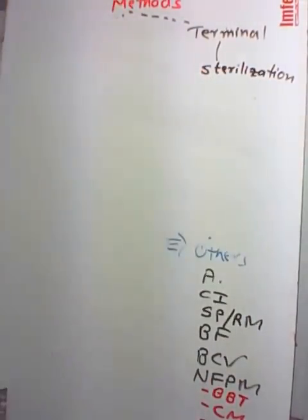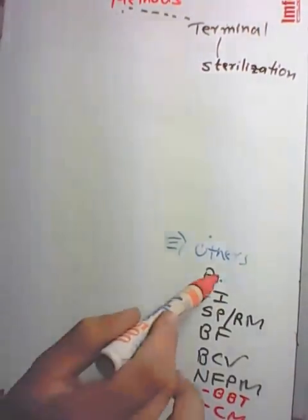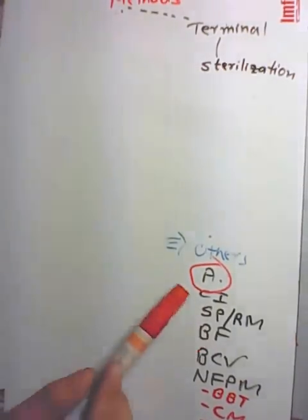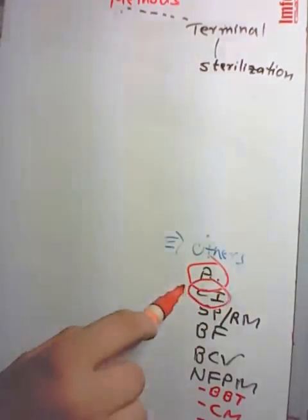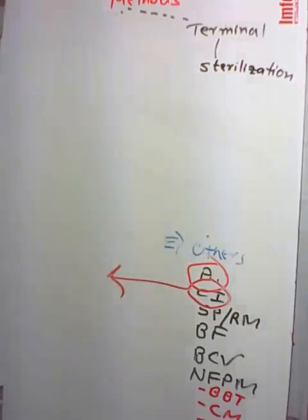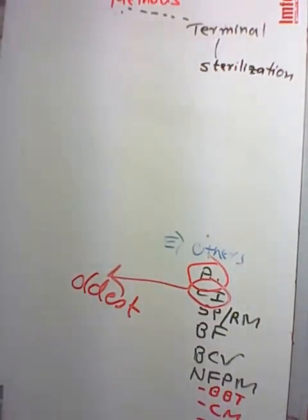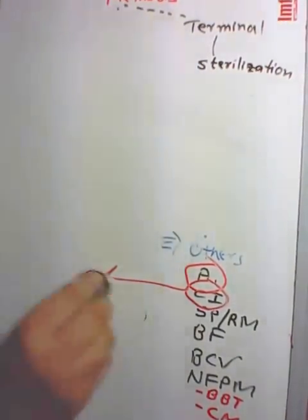Other methods: (1) Abstinence — complete sexual abstinence basically represents sacrificing a natural drive, which can lead to psychiatric problems, nervous breakdown, or temperamental changes. (2) Coitus interruptus — Park describes it as the oldest voluntary method of fertility control.